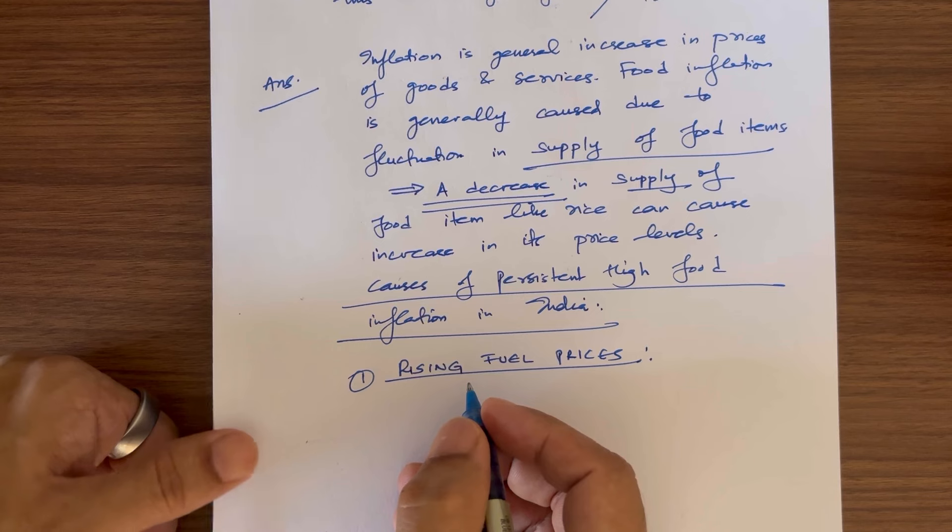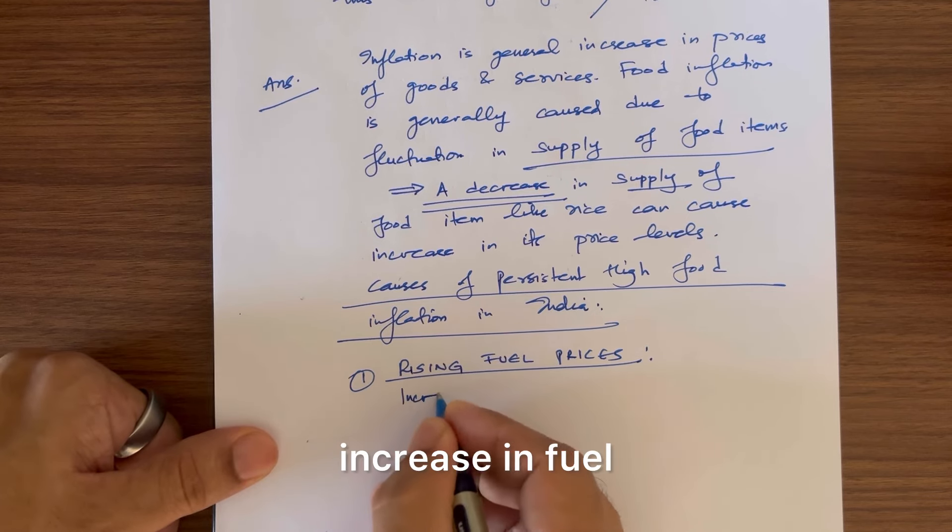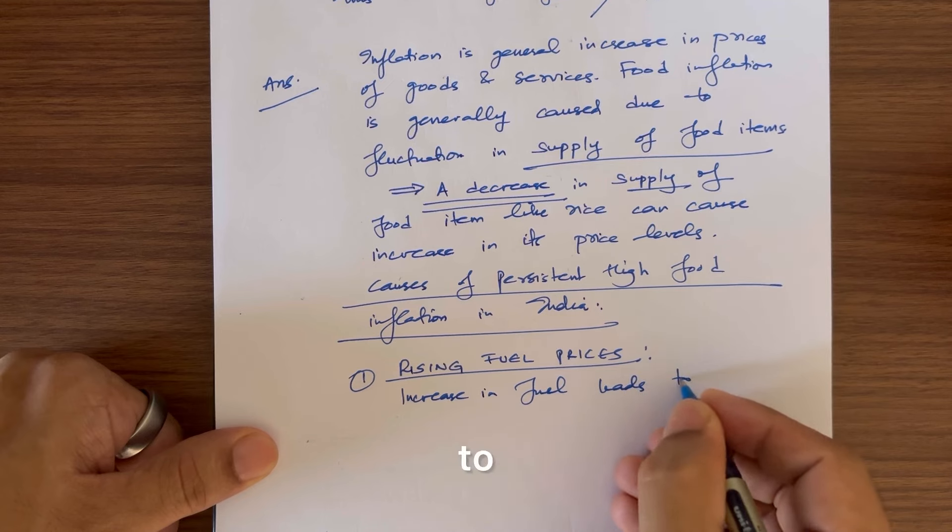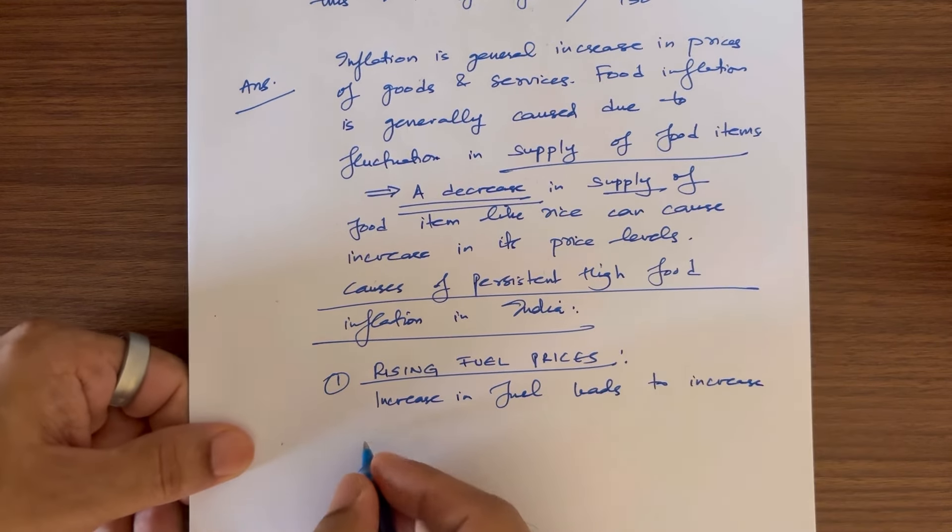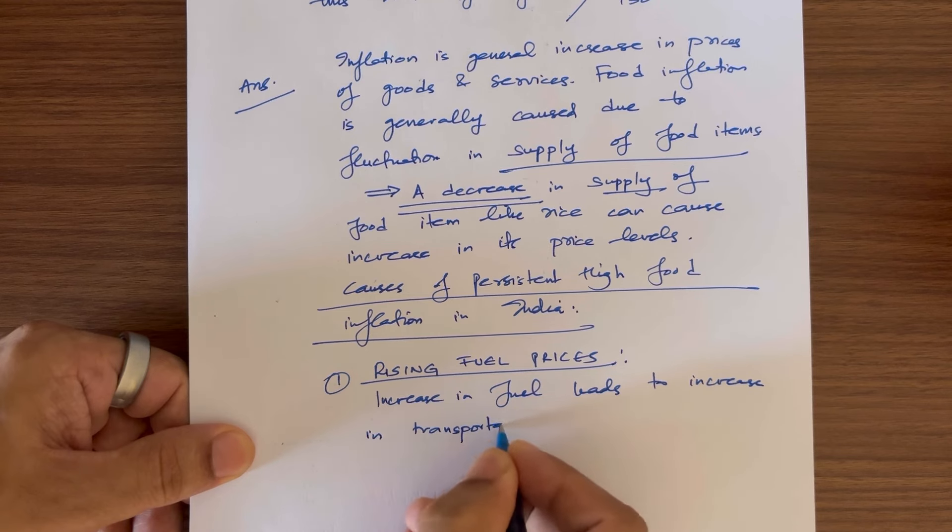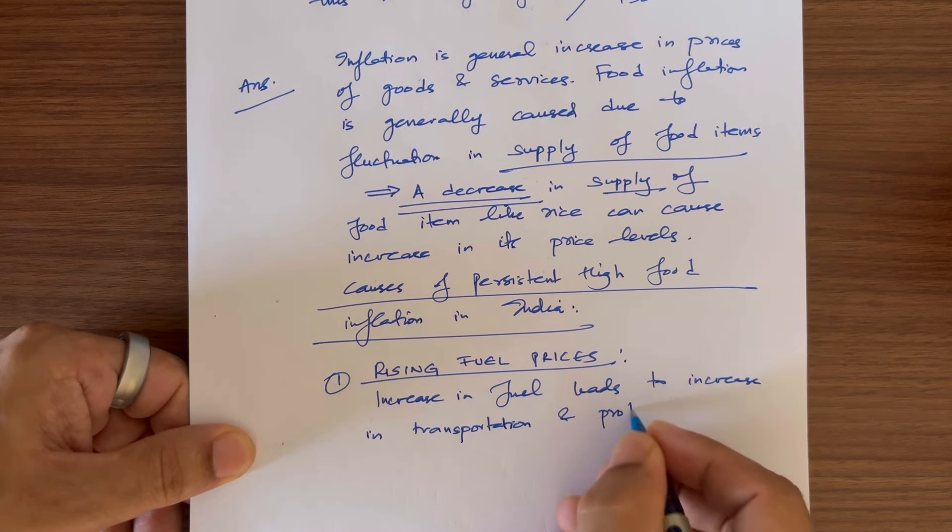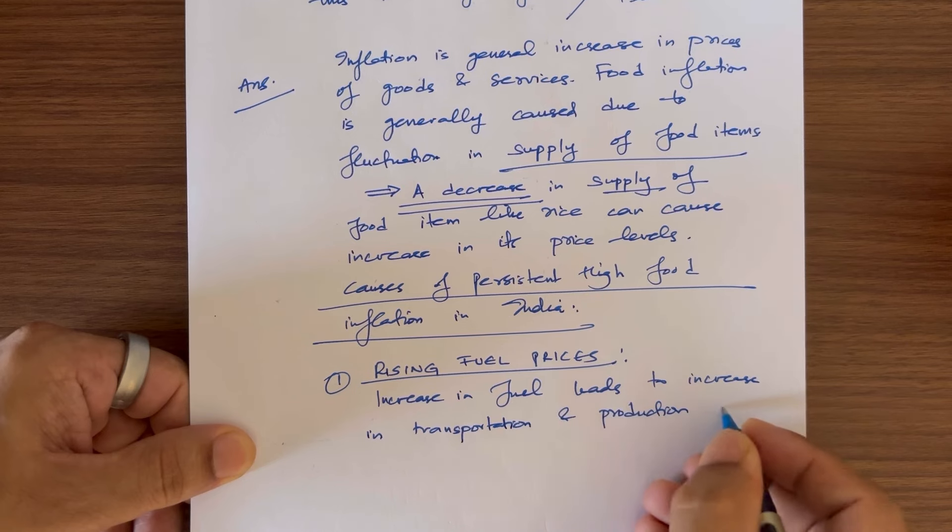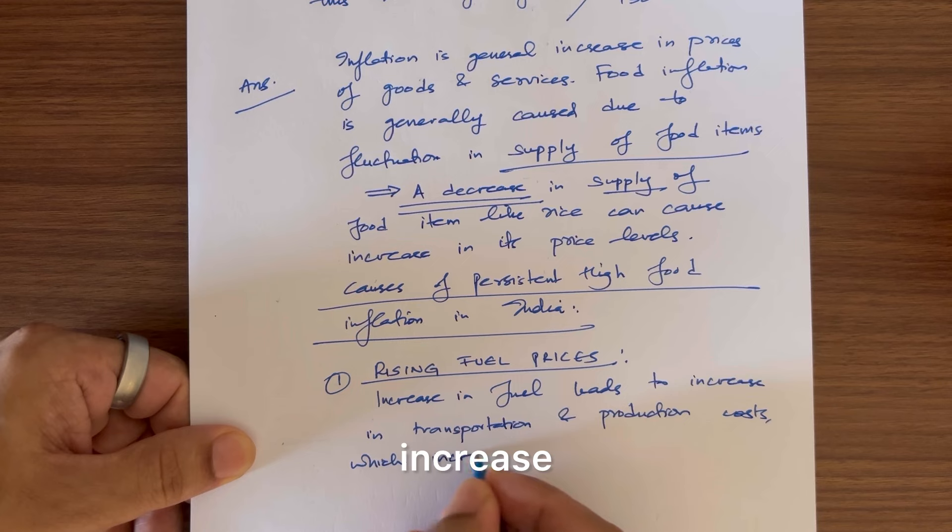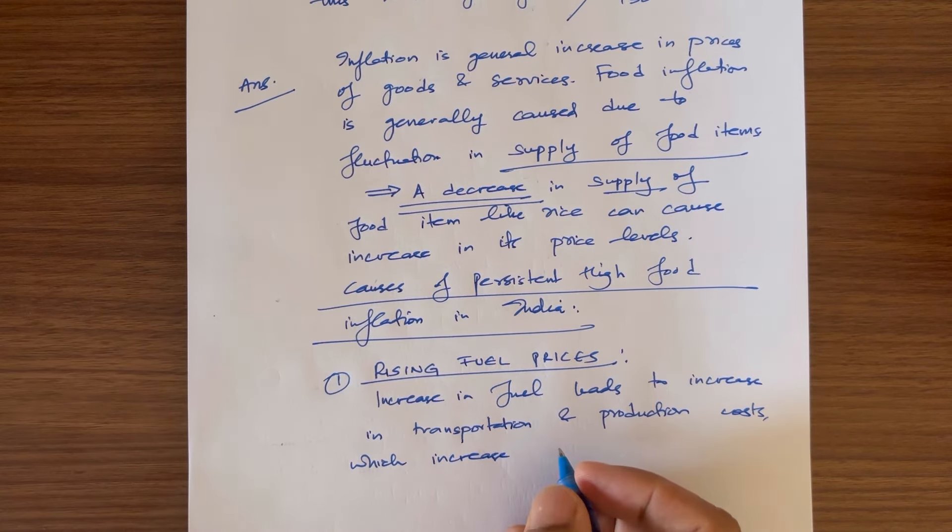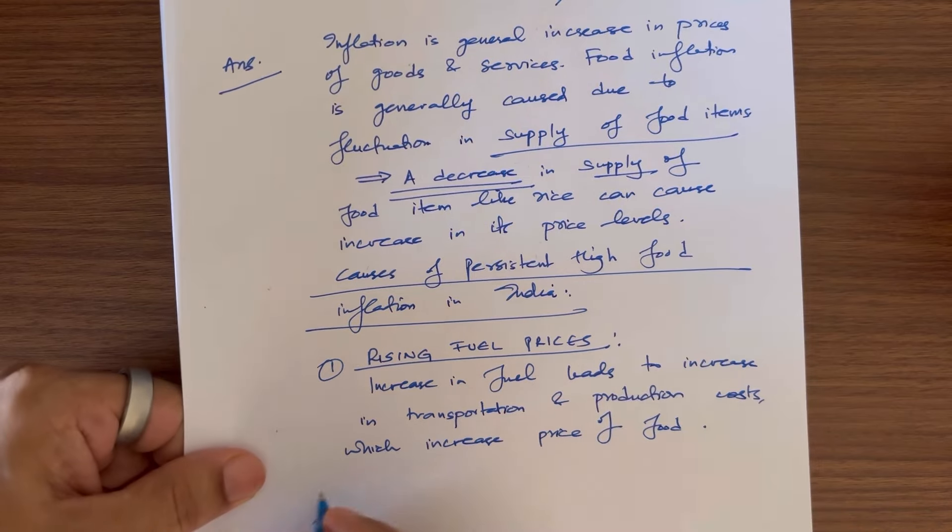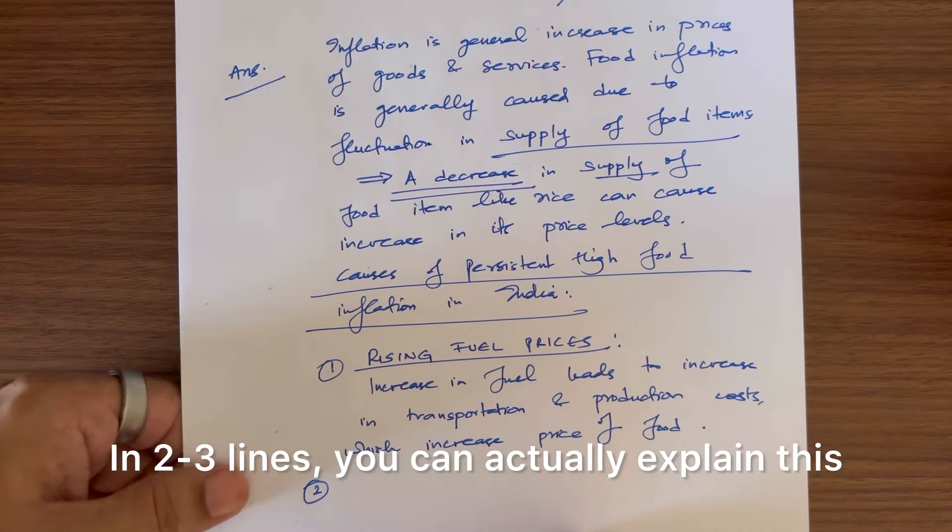Increase in fuel leads to increase in transportation and production costs which can increase price of food. In 2-3 lines, you can actually explain this.